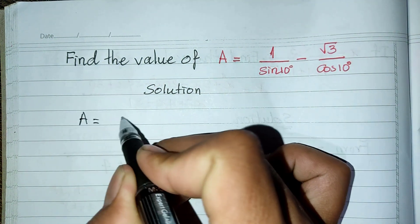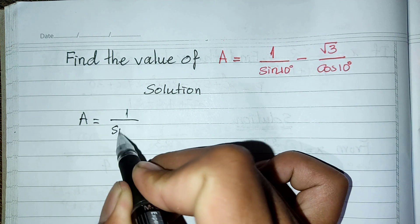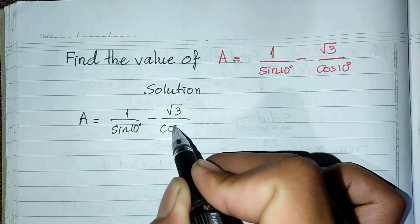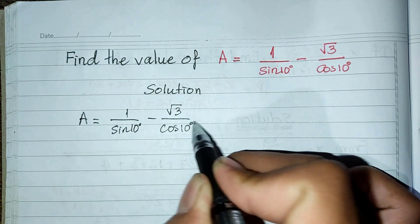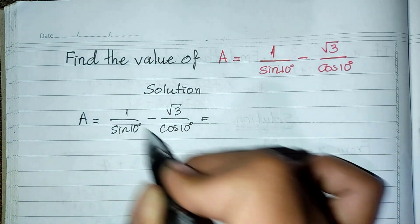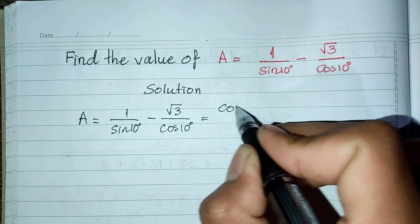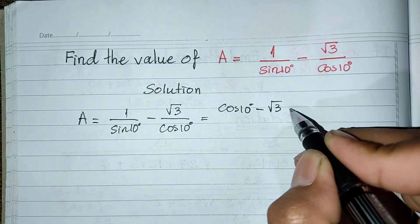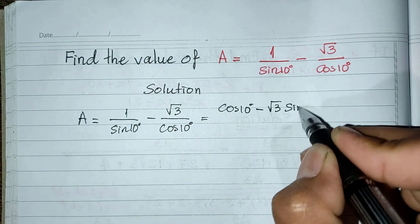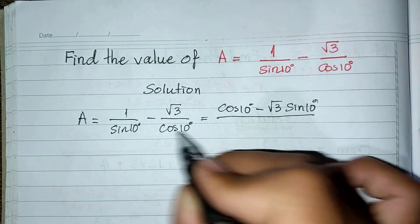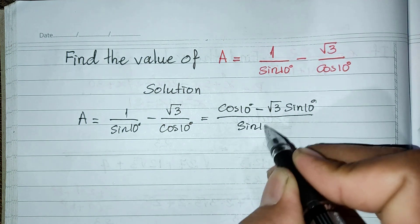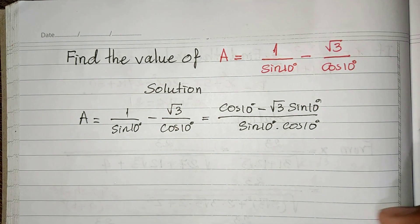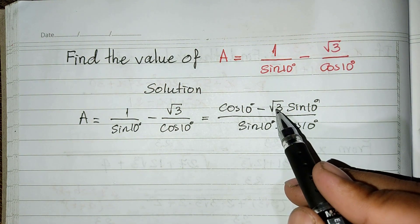So what we have is A equals 1 divided by sine 10 degrees minus square root 3 divided by cosine 10 degrees. Now I multiply across, so we get cosine of 10 degrees minus square root 3 multiplied by sine of 10 degrees, all divided by sine of 10 degrees multiplied by cosine of 10 degrees.